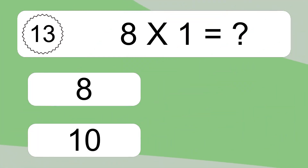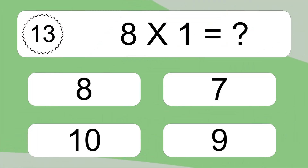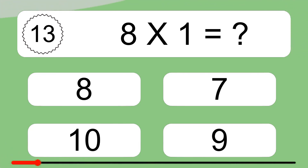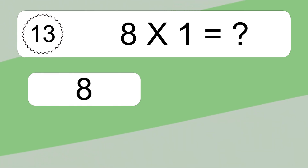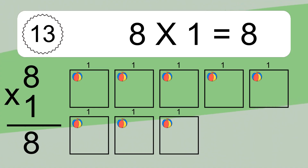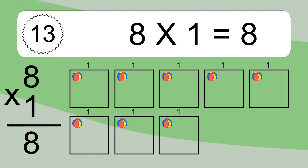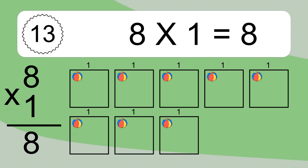8 times 1 equals what? 8 times 1 equals 8. We have 8 boxes and each box has 1 colorful ball inside. If you count all the balls in all the boxes together, you will have 8 times 1 balls. This equals 8 balls.